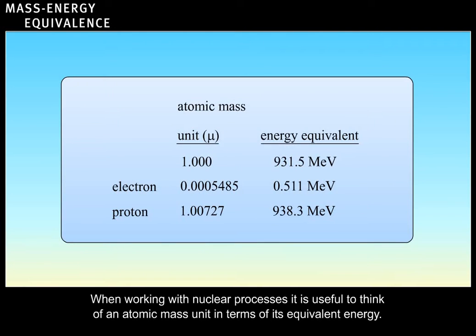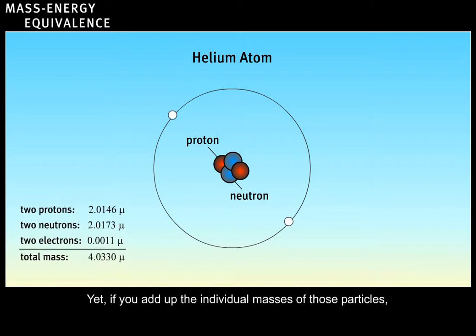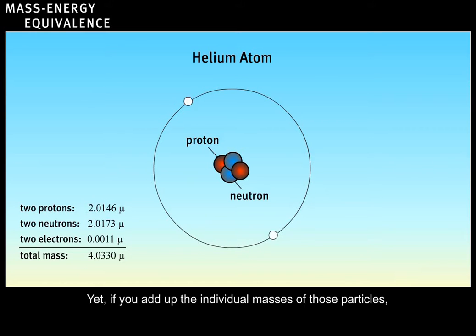When working with nuclear processes, it is useful to think of an atomic mass unit in terms of its equivalent energy. A helium atom contains two protons, two neutrons, and two electrons. Yet, if you add up the individual masses of those particles, the total is more than the mass of a helium atom.